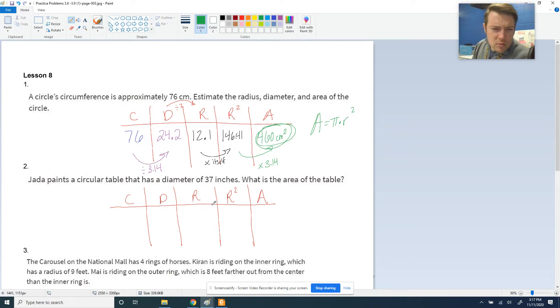Looking at number two, Jada paints a circular table. We have the diameter there, and that's 37 inches. So it's asking us to go from diameter to area. So we don't have to worry about the circumference. We just got to work the rest of the table out.